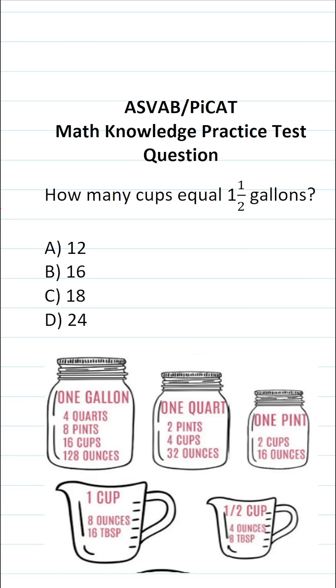So in order to answer this conversion problem, you have to know that in one gallon, there are 16 cups. So one gallon is equal to 16 cups.